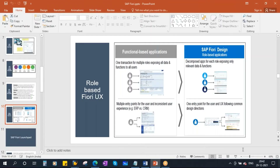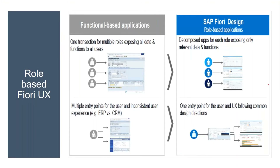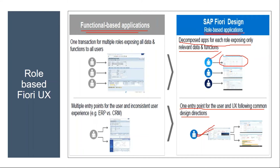Whereas in Fiori, it is role-based — only according to your role will you get the relevant apps. Decomposed apps for each role expose only relevant data and functions. There is one single entry point for the user, with UX following common design directions. So the traditional GUI is function-based, while Fiori is role-based. When the user logs in, he gets only the apps assigned to his role.